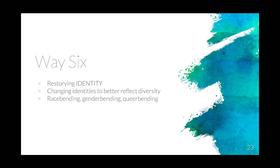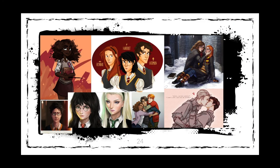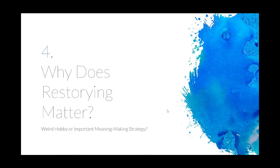The sixth is re-storying identity, which involves changing the identities of characters to more accurately reflect the diversity of the world, to blur boundaries between traditional categories, or to create characters who more closely mirror the reader's identity. Keywords here are race bending, gender bending, and queer bending, which are used to describe re-storying in which characters' races, genders, or sexualities are altered from the canon. It's especially popular in fan art, but queer bending also appears very frequently in fan fiction, especially in what's called slash fiction. So let's take Harry/Draco fanfic as an example — that's going to be a story in which Harry and Draco are in a relationship together. Both characters have been queerbent, and it gives readers who don't often see their sexualities represented in literature a way to re-story themselves into the pages of their favorite books.